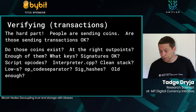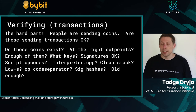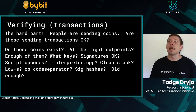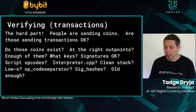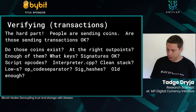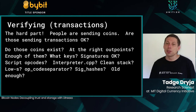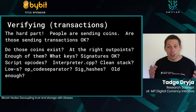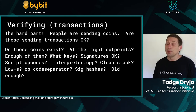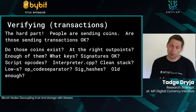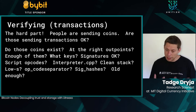Verifying transactions is the hard part. People are sending coins — are these transactions okay? You need to know so much data to determine whether a transaction is valid. A transaction in isolation, you can't tell: do the coins exist at the right places? Are there enough? What are the keys? Are the signatures valid? Script opcodes, interpreter, clean stack — so many checks. A transaction can be 200–300 bytes, but in practice today you need gigabytes of storage to verify a single transaction's validity.